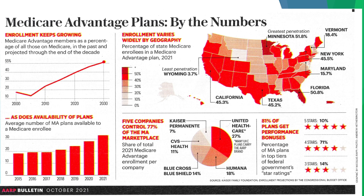The types of plans available to you continues to increase, to the point that it can be very baffling and confusing as to which plan is most appropriate for you. Five companies currently dominate the Medicare Advantage marketplace: UnitedHealthcare in first position, followed by Humana, Blue Cross Blue Shield, CVS, and Kaiser Permanente. 81% of the plans get bonuses, meaning they either have a five-star or four-star rating, which means the quality of programs and the type of complaints they get are minimized. California has 45% of the eligible population enrolled, New York has 45.5%, and Maryland has 15.7%.